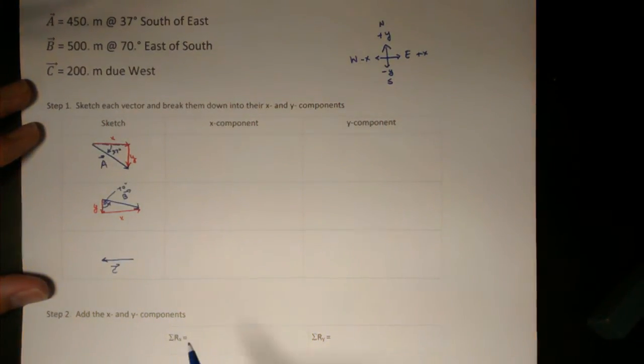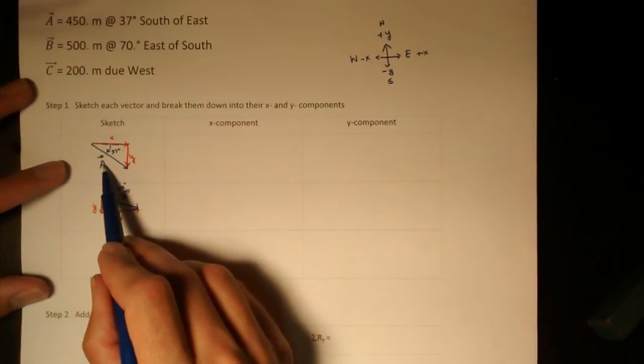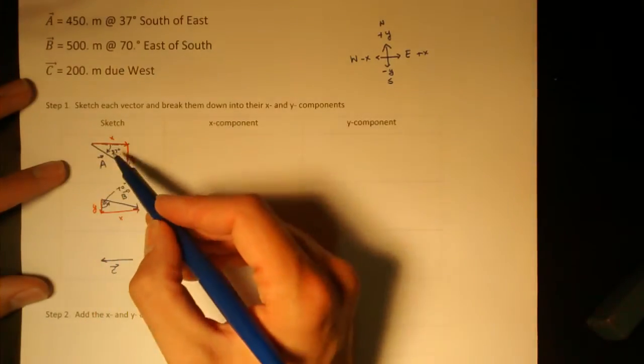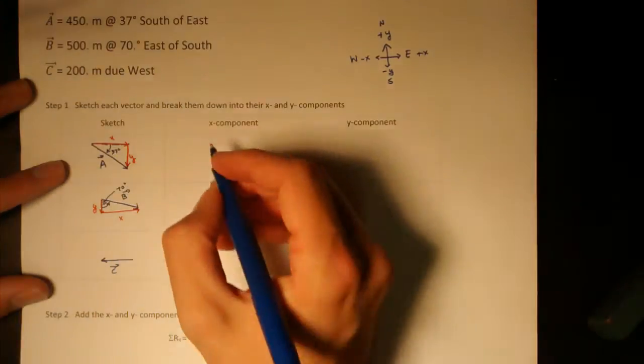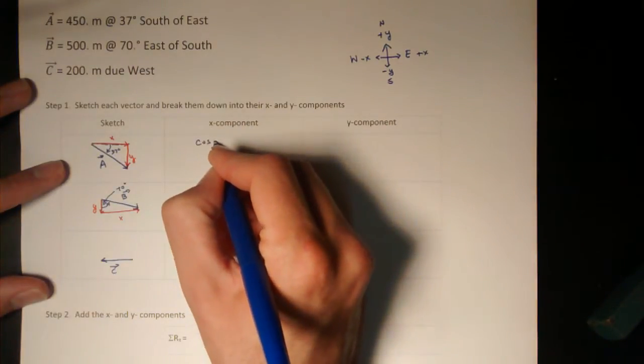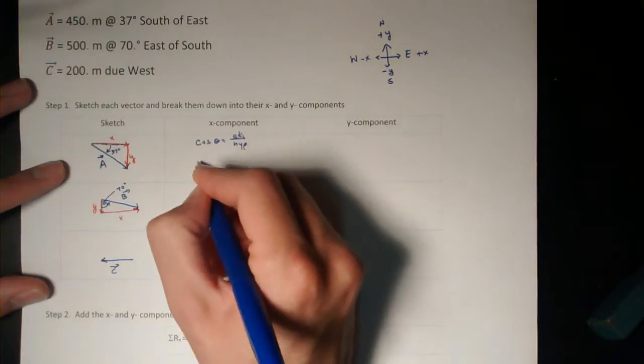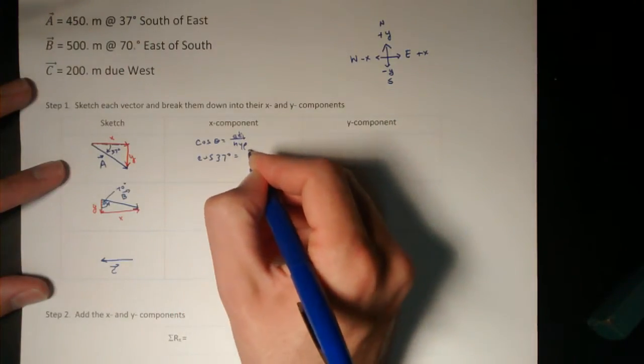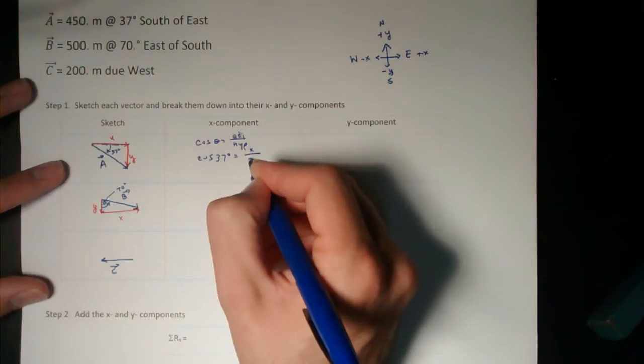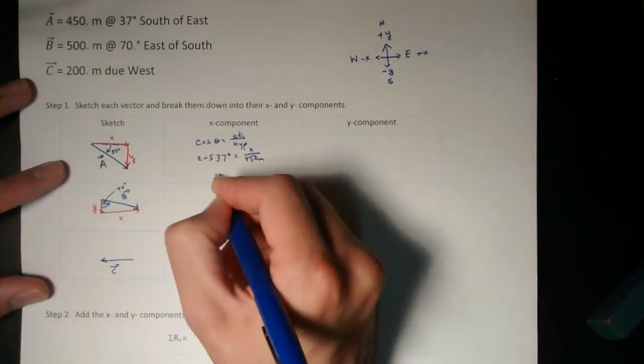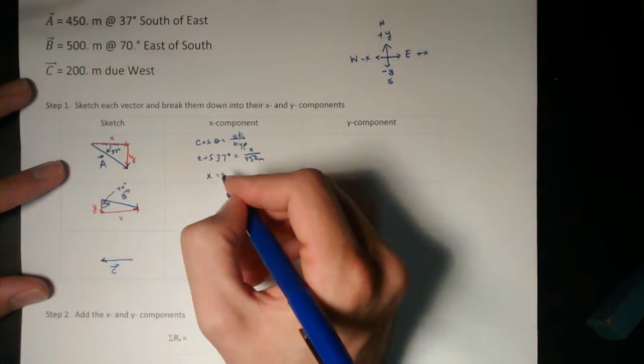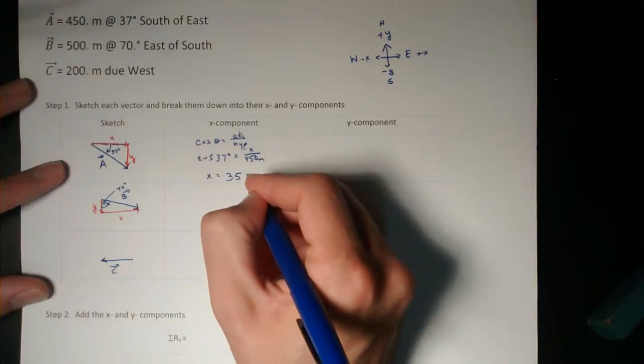Okay, now I'm ready to break these vectors into their components. So to get the x component of vector a, I see that x is adjacent to the angle. So I'll use cosine theta equals adjacent over hypotenuse. So the cosine of 37 degrees is equal to that x component over 450 meters. And so the x component of that vector is 359 meters.